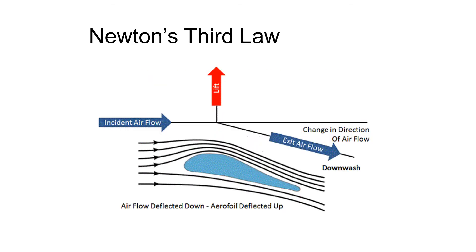Newton's third law states that for every action there is an equal and opposite reaction. Air flowing beneath a wing is deflected downward, and air flowing over the top of the wing is pulled downward. This action of the air being forced downward has the opposite reaction of forcing the wing upward, which accounts for a considerable portion of lift.